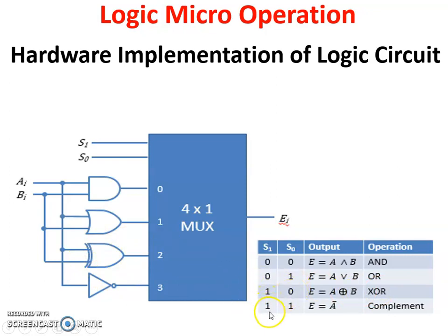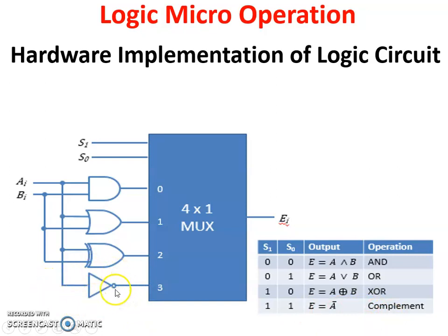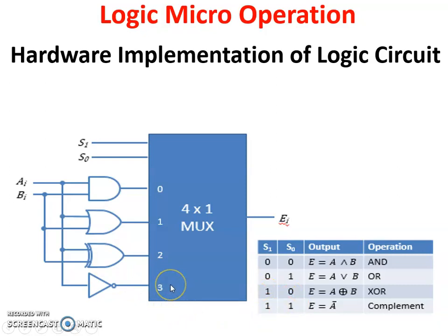The last one: S1 and S0 are both one. So it performs complement — this is the NOT gate. If input is one it gives output zero; if input is zero it gives output one. Binary 11 is equal to decimal 3.